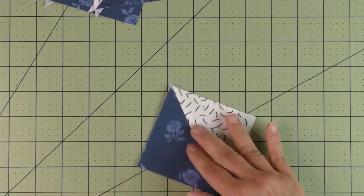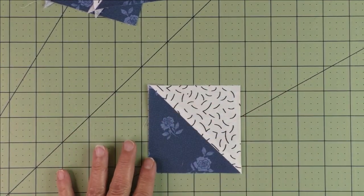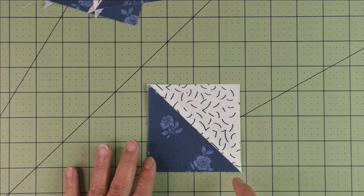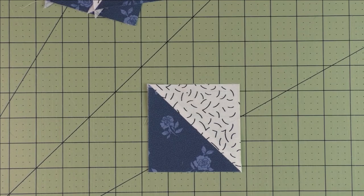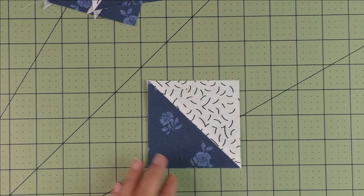Now some people prefer to cut their squares bigger than is needed so they can trim down the half square triangle later. I prefer to cut it the right size and just sew a scant quarter inch. If it is a little bit bigger then you can always trim off if you need to.